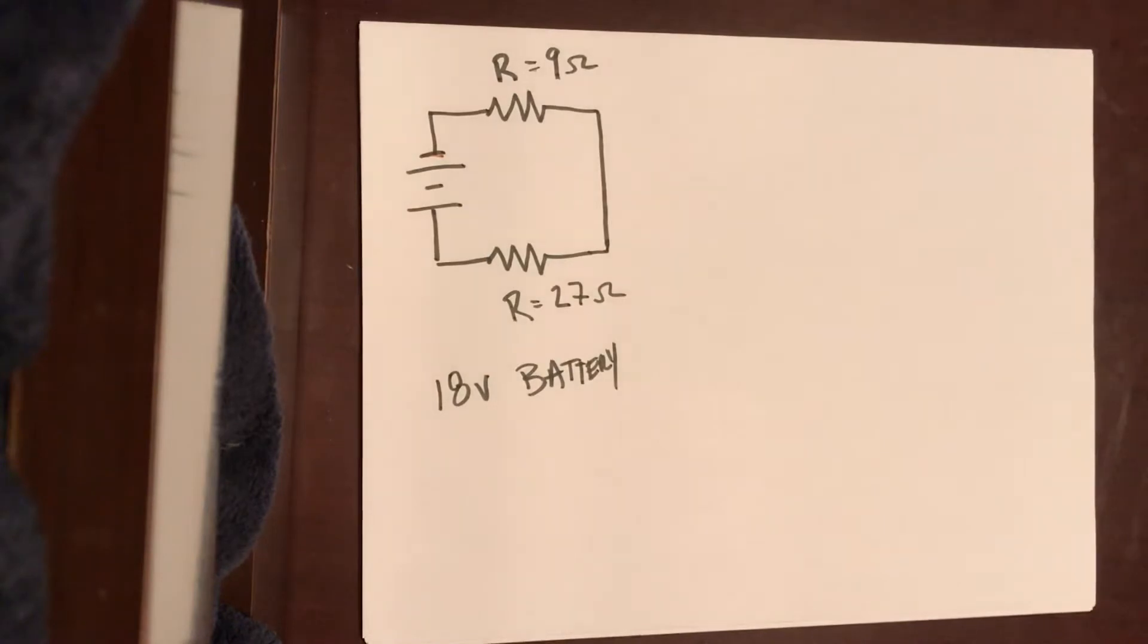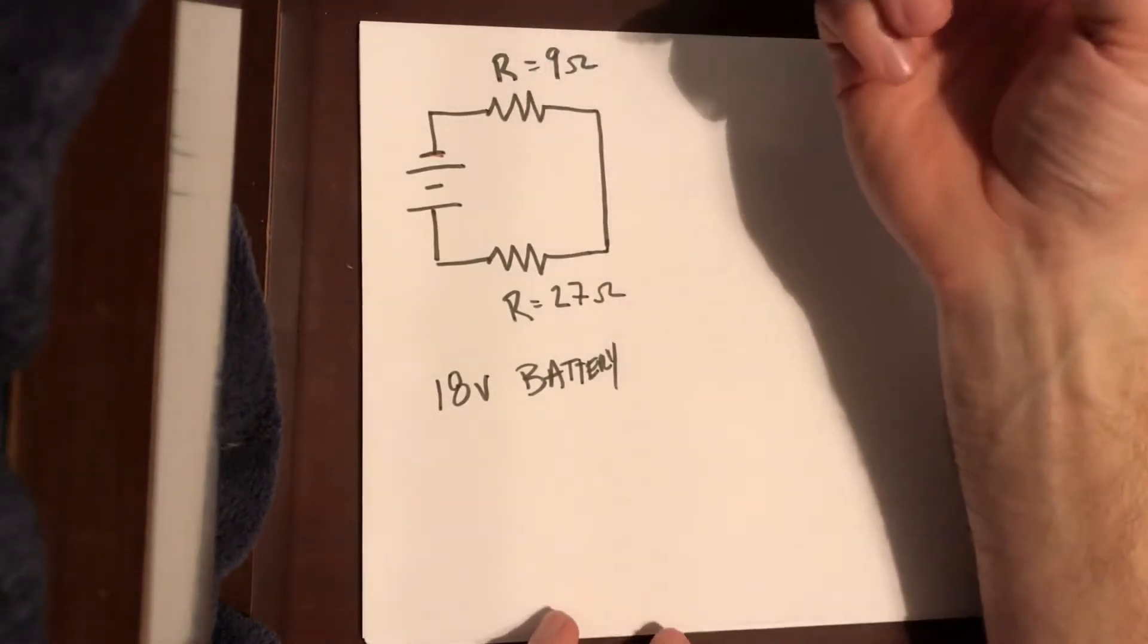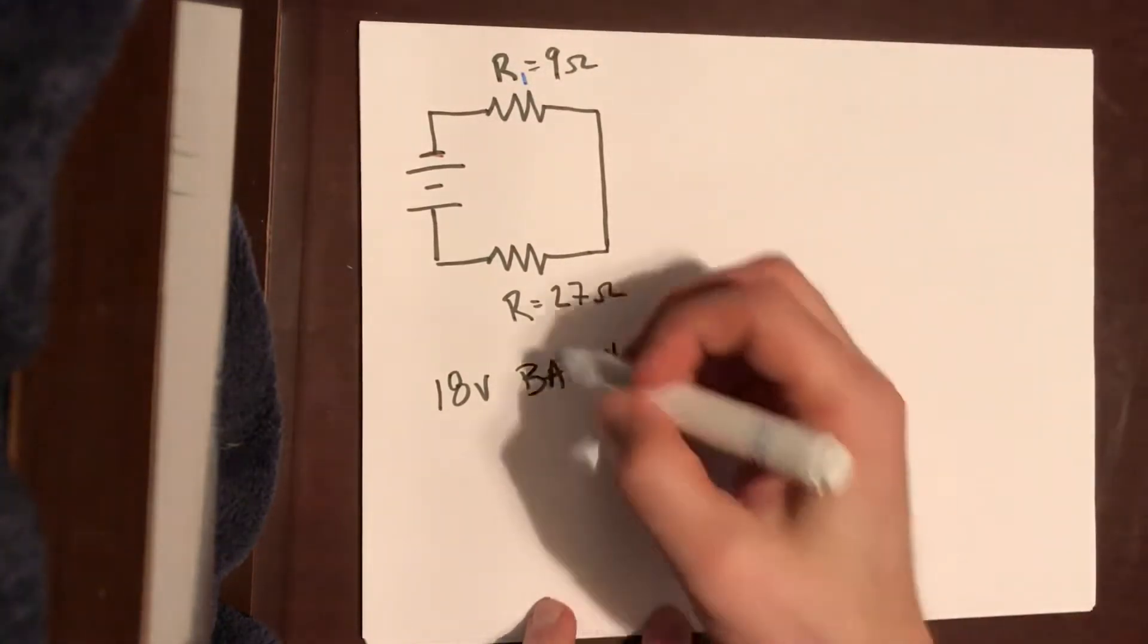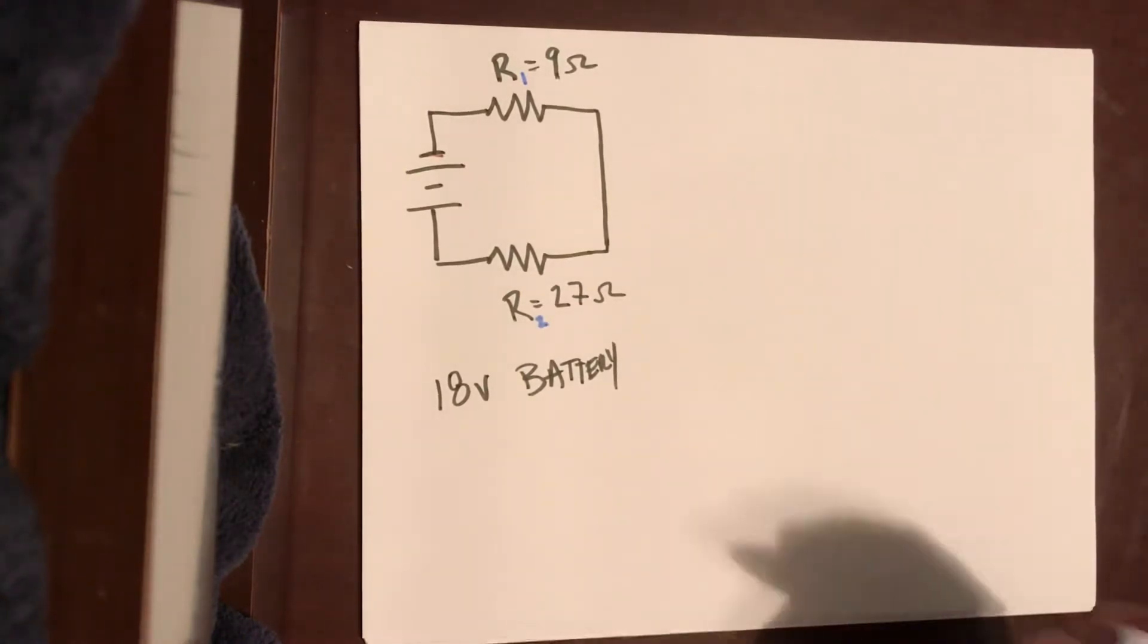One of the first things that we said that we need to do is we need to write down Ohm's law for each of the objects that we have, which means we're going to be writing it down three times. Before we can do anything like that, there's a couple things that we want to do. We want to number each of these resistors, so I'm going to label that R1 and I'm going to label this R2. There's no rhyme or reason to which one you label, it's just something for us, for bookkeeping, for later.